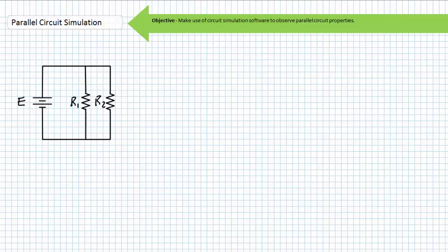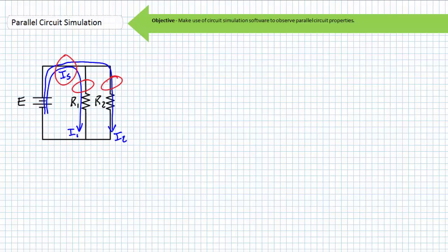In order to observe current, we need to place three ammeters: one to measure source current, one to measure current through just R1, and another to measure current through just R2. Realize this isn't just a plain vanilla parallel circuit anymore. Because of the existence of the ammeters, we're in effect creating a series-parallel relationship. All current must flow through the ammeter used to measure source current. Only current bound for R1 travels through the ammeter used to measure I1; only current bound for R2 travels through the ammeter used to measure I2. Via Kirchhoff's current law, I1 plus I2 should equal source current IS.